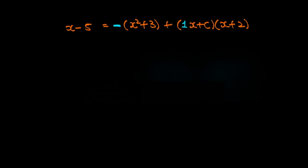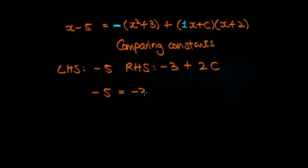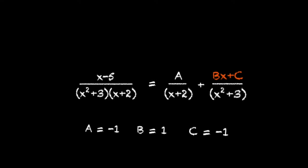Let's finish off by comparing the constant terms. On the left we have a constant of minus five. On the right, we have minus three from the a term, and from the brackets we have 2c. So minus five must equal minus three plus 2c. Adding three to both sides gives minus two equals 2c, therefore c is equal to minus one. Looking back at our original problem, we now have our values for a, b, and c, and so these are our partial fractions.